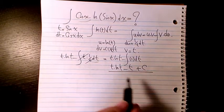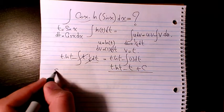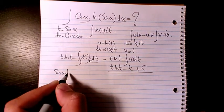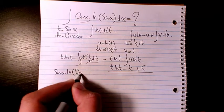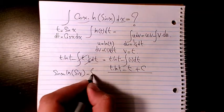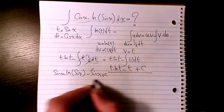So since t is sine x, I will write sine x ln sine x minus sine x plus C. That's the final answer.